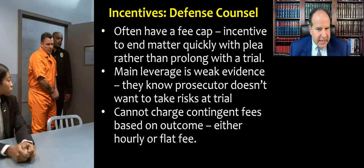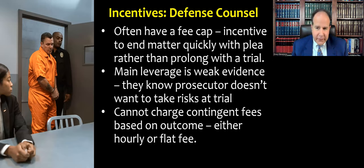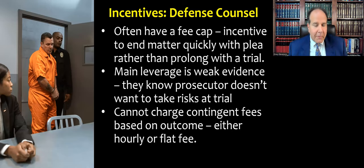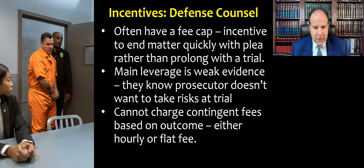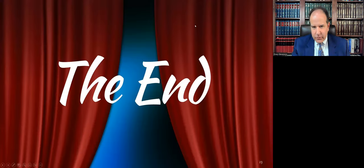Defense counsel has their own set of quirky incentives. If you're court-appointed counsel — and most defense counsel in our criminal justice system is — then in a lot of states there's a fee cap, so you get paid a modest amount per hour and then it caps out. If there's a fee cap, you have an extra incentive to end the matter quickly with a plea rather than prolong it with a trial. The longer you spend on the case, the less you're making per hour in that sense. Remember that the prosecutor doesn't really want to take risks at trial, so weak evidence is your main leverage. Also keep in mind that in the United States, defense counsel cannot charge contingent fees in criminal defense cases based on the outcome — they have to charge an hourly rate or a flat fee. Think about how that affects their perception of the benefits of going to trial. And that concludes our lecture about transaction costs and criminal law.